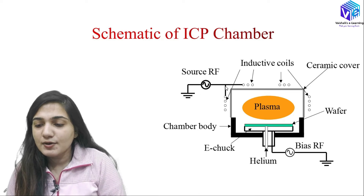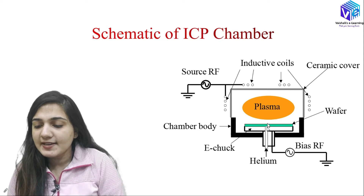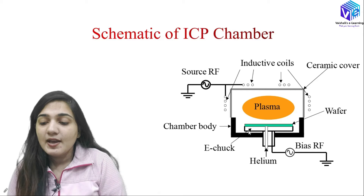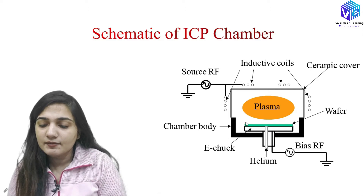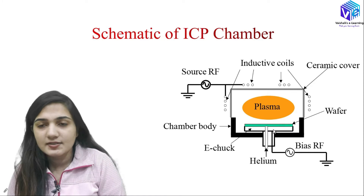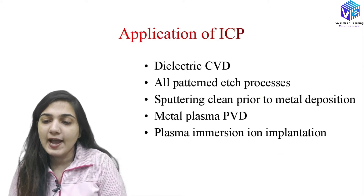In the ICP chamber schematic, we have the source RF supplying power to the inductive coils present around the chamber body. We supply helium for backside cooling, and there is an electrostatic chuck to keep the wafer stable under the low pressure conditions inside and higher pressure beneath. Bias RF is also supplied to get the bias current for enhanced ion bombardment, generating higher density plasma.